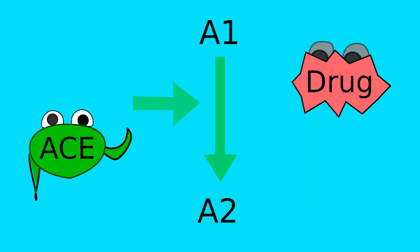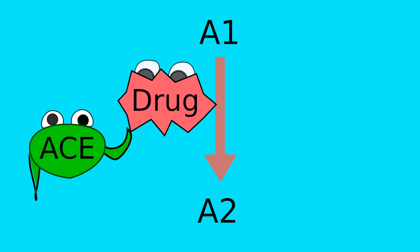Lisinopril, an ACE inhibitor, stops angiotensin 1 from converting into angiotensin 2. Why do we want to do that?